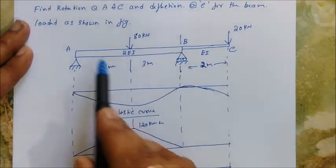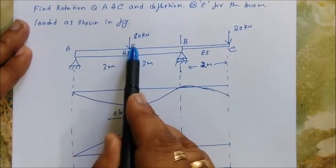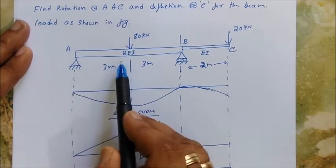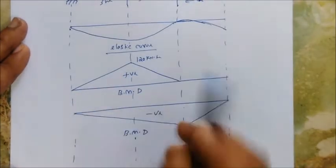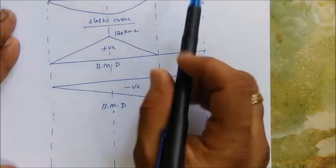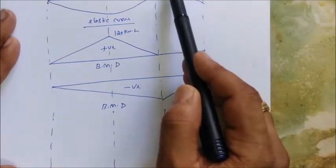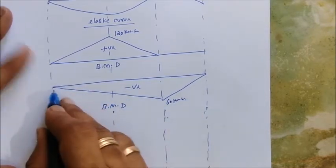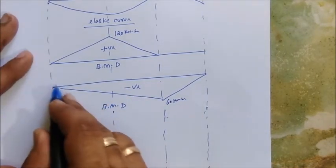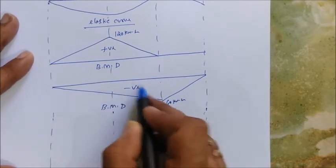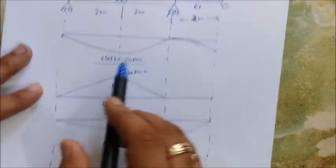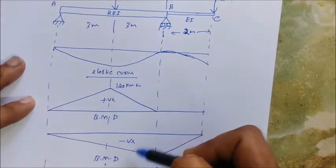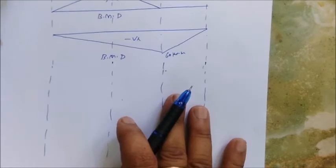For the load in region AB — 80 kilonewtons — the reaction is symmetrical so it is 40 and 40. 40 into 3 is 120, so it's a triangular shape: 120 and 0. Now consider the 20 kilonewton load: 20 into 3 is 60 kilonewton-meters. It decreases to zero at A because the bending moment at the free end is 0. This is hogging so I give a negative sign convention. Positive means downward arrow, negative means upward — very important for the conjugate beam.